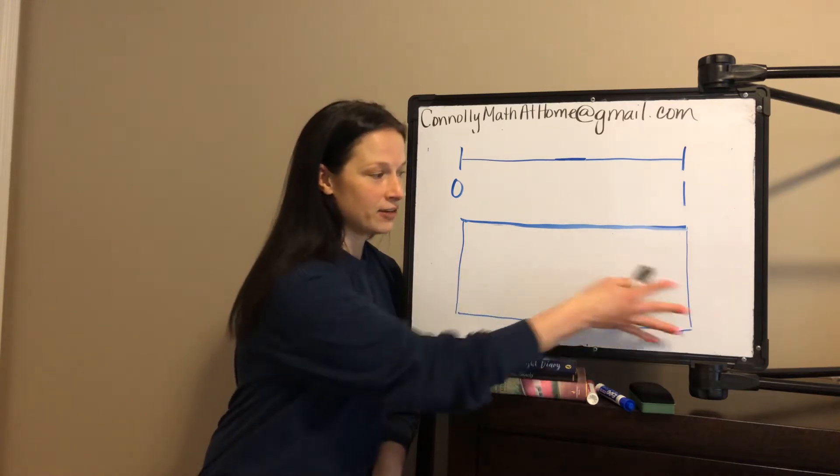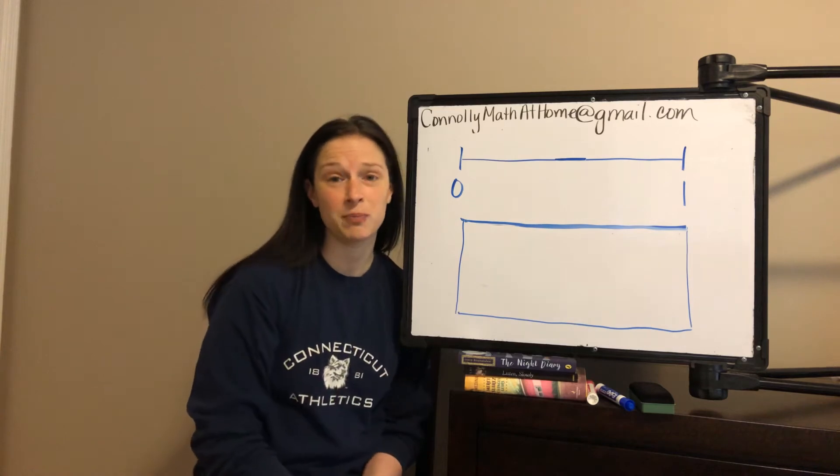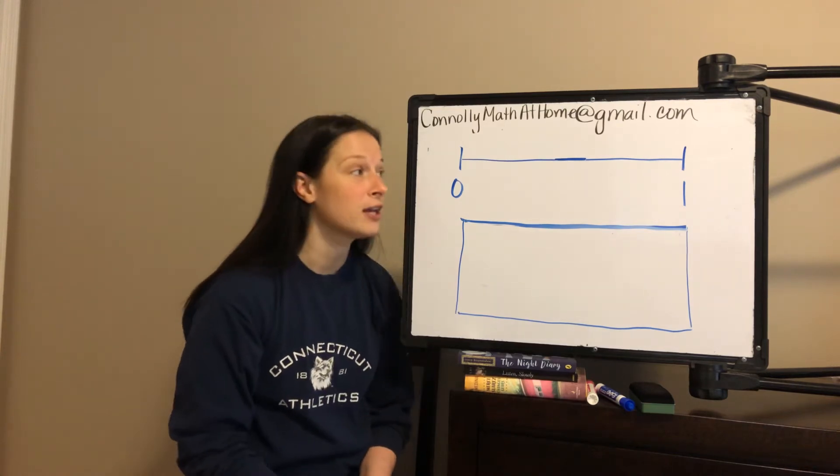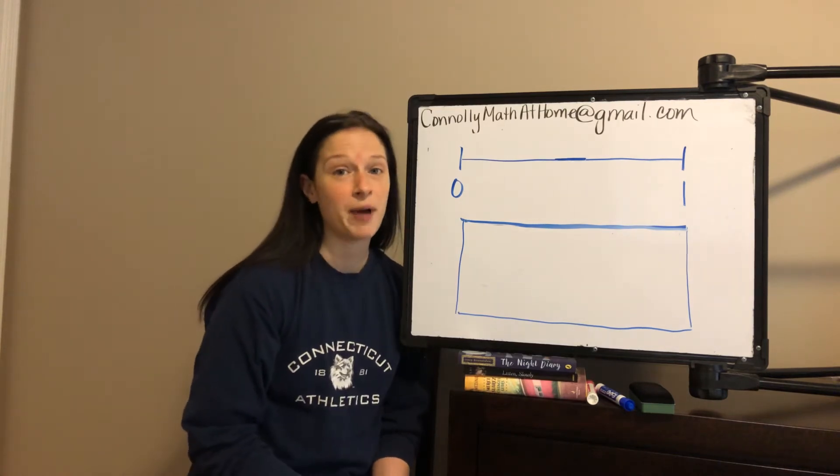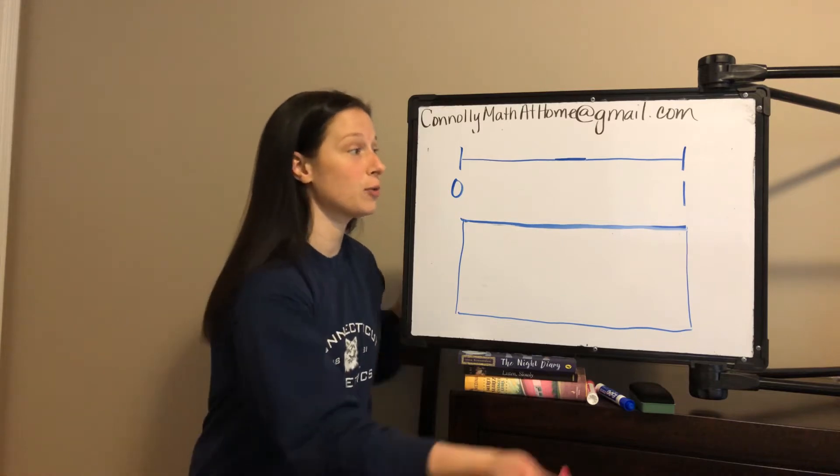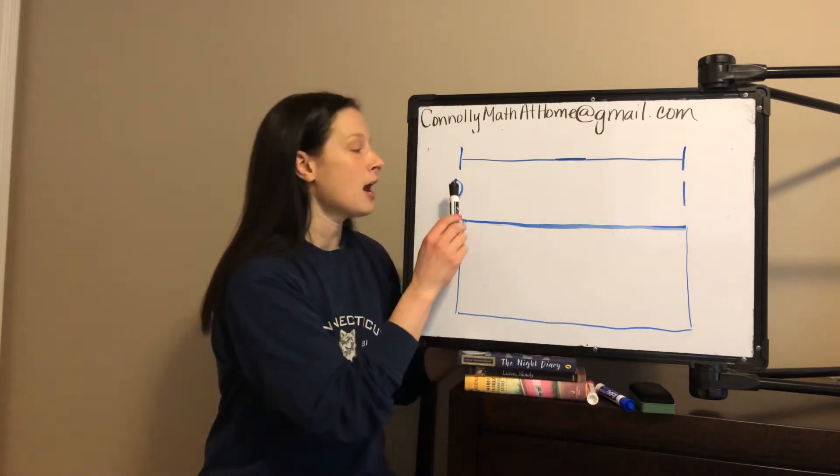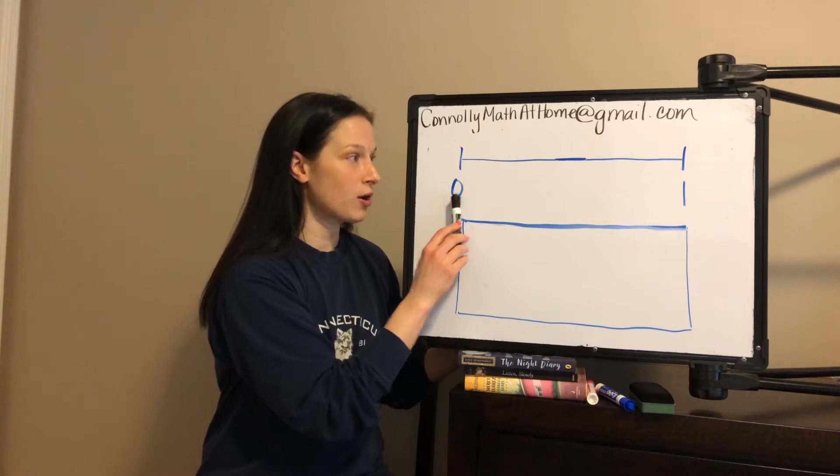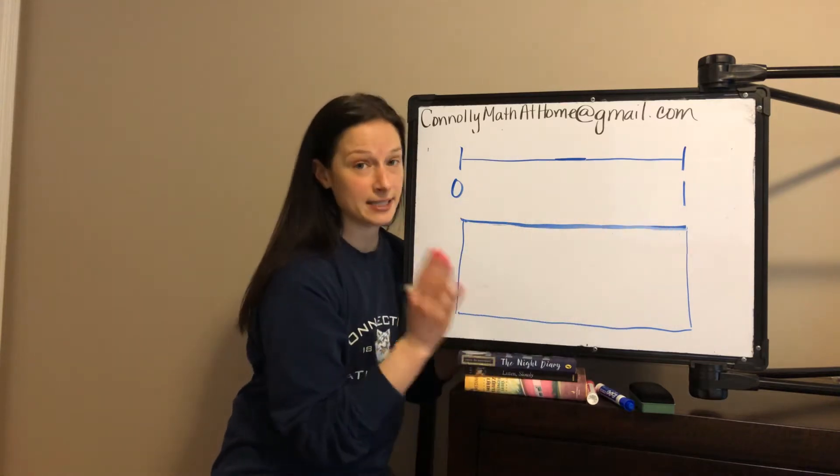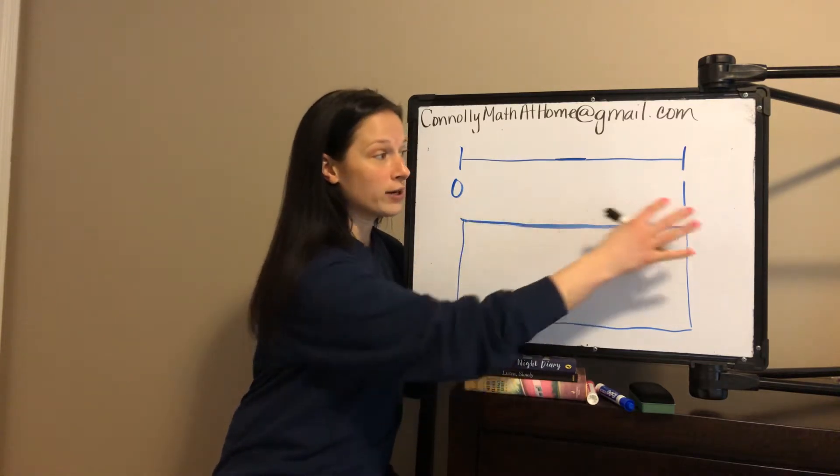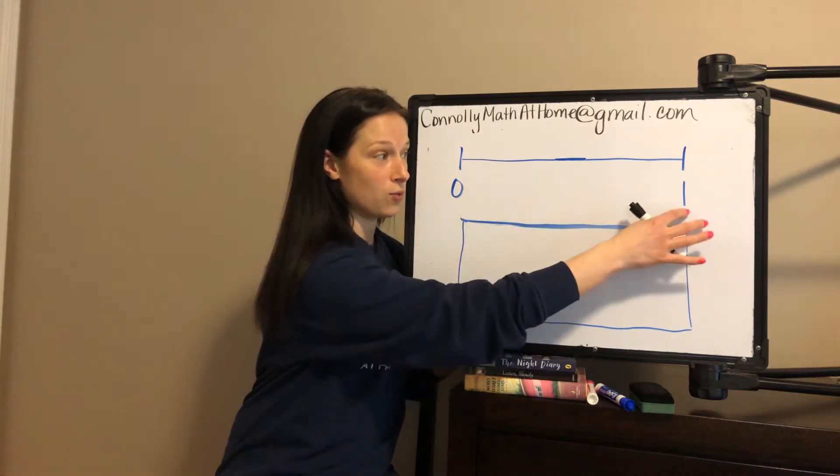So I have an area model here, a nice big rectangle. I'm going to be showing the fractions there as well. Let's talk about one half first. When we think about the number line, we have 0 to 1. So the distance on this number line is one whole, 0 to 1.